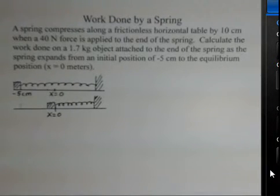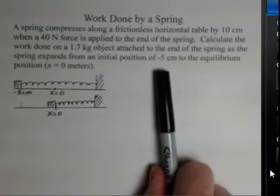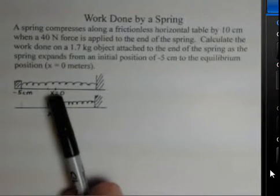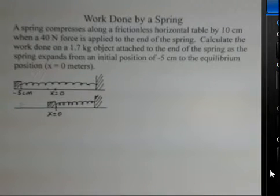We want to know the work done on a 1.7 kilogram object. Let's say we start at minus 5 centimeters from the equilibrium position and then come back to the equilibrium position. So how much work does the spring do on this object?